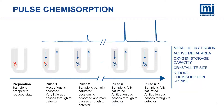Less active gas from pulse 2 interacts with the sample since it's partially saturated. Eventually, we get to pulse N, where the sample is fully saturated with no adsorption and the full active gas injection makes it to the detector. By knowing the volume of the injection loop, the volume of adsorbed gas can be quantified through peak integration. Pulse chemisorption results can give metal dispersion, active metal area, oxygen storage capacity, crystallite size, and strong chemisorption uptake.